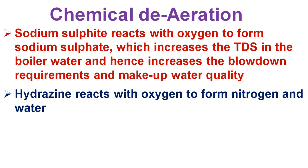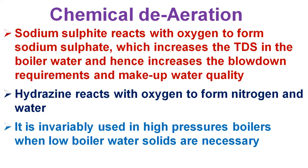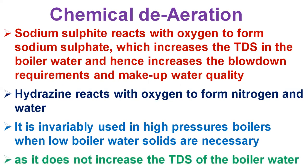In boiler systems, steam is preferred for deaeration because steam is essentially free from oxygen and carbon dioxide, is readily available, and adds the heat required to complete the deaeration. While most efficient mechanical deaerators reduce oxygen to very low levels — 0.005 mg/L — even trace amounts of oxygen may cause corrosion damage. Consequently, good operating practice requires removal of that oxygen with a chemical oxygen scavenger such as sodium sulfite or hydrazine. Sodium sulfite reacts with oxygen to form sodium sulfate, which increases TDS in the boiler water and hence increases blowdown requirements. Hydrazine reacts with oxygen to form nitrogen and water, and is used in high-pressure boilers where low boiler water solids are necessary, as it does not increase TDS.